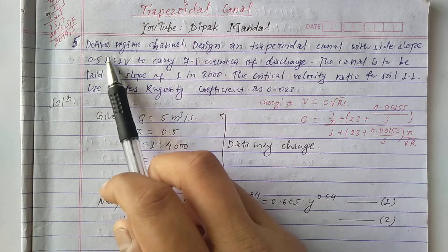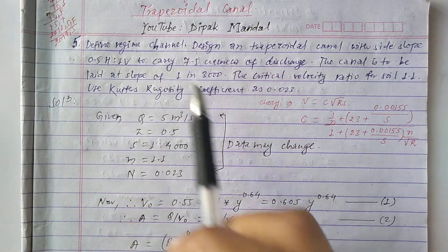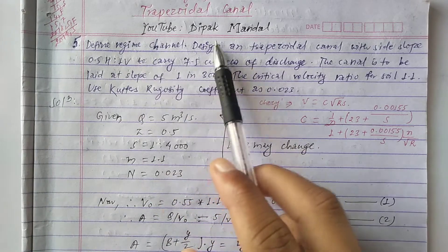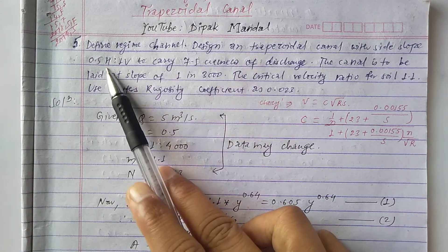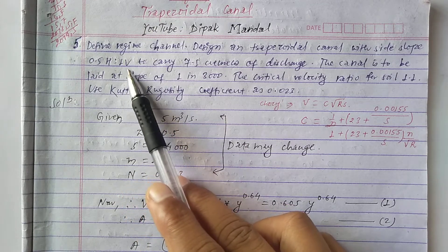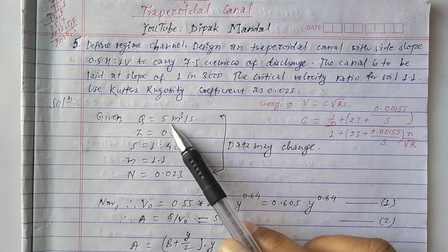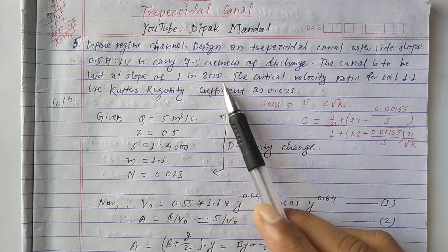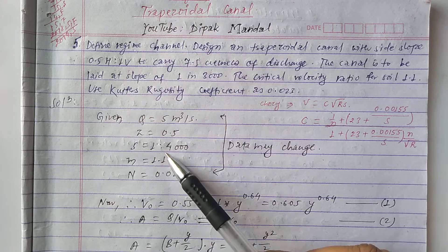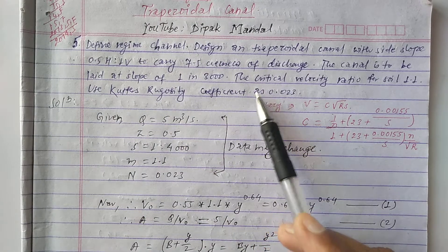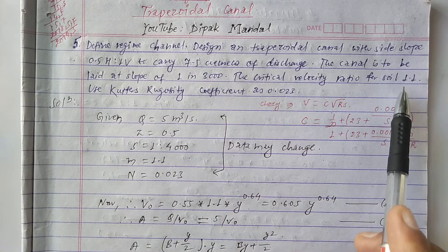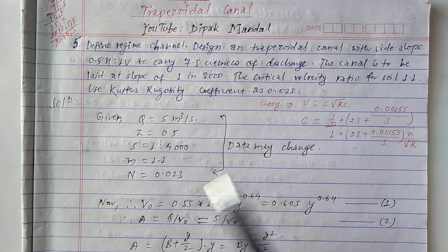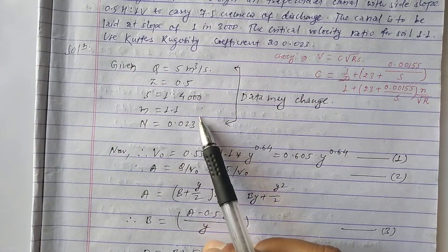Now we have the question: design a trapezoidal channel with a side slope of 0.5H to 1V, to carry a discharge Q of 7.5 — or specifically 5 cubic meters per second. The canal is to be laid at a slope of 1 in 3000. The critical velocity ratio m is taken as 1.1, and Kutter's roughness coefficient n is 0.023.